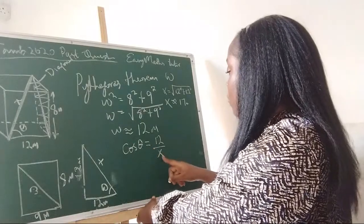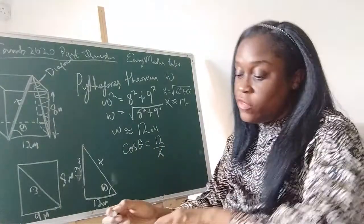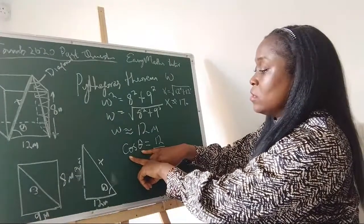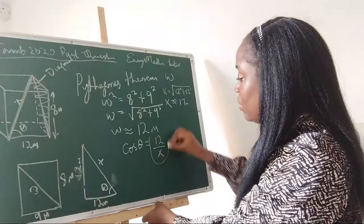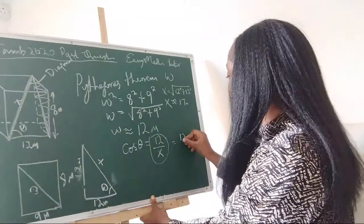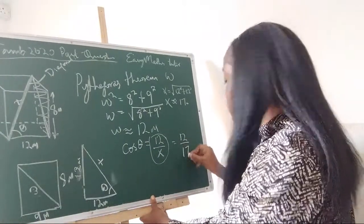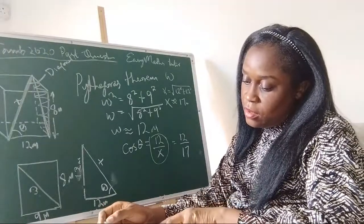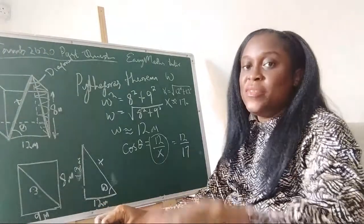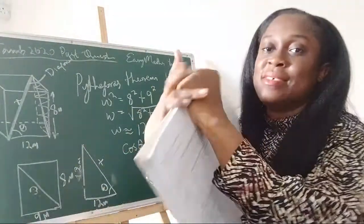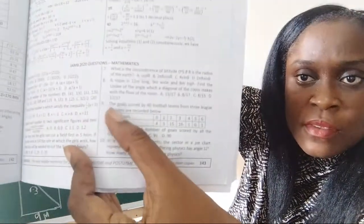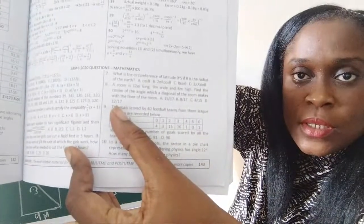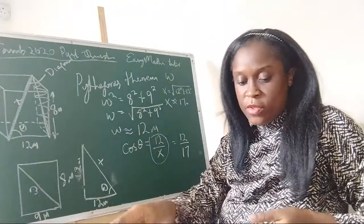With x approximately 17 meters, we can now find the cosine. The question says find the cosine of the angle. So our answer is 12 over 17. That is the cosine of the angle. Looking at the options, option D gives us 12 over 17.